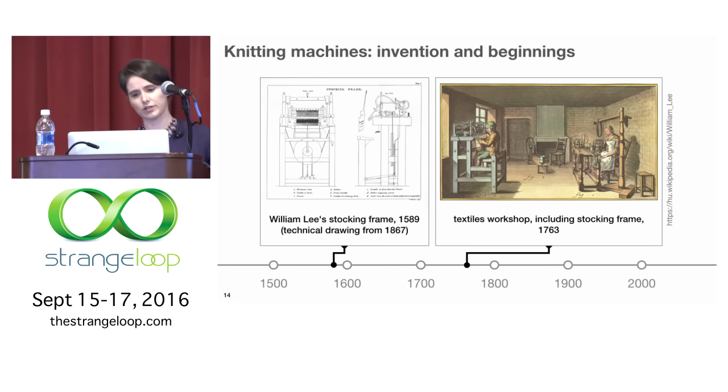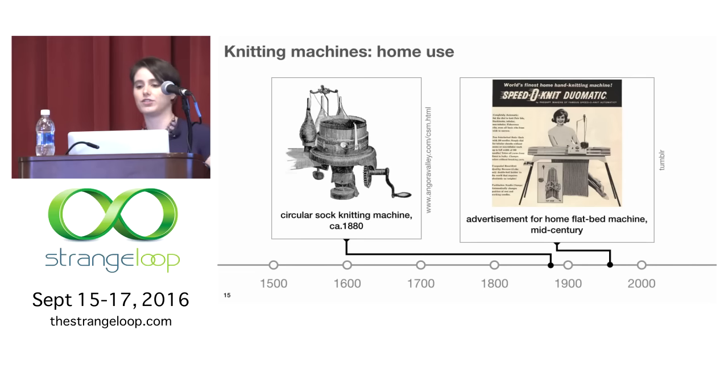And so these stocking frames would be found in cottage industry workshops. So they wouldn't be like a home so much as like a home industry. Just like a loom or a spinning wheel. By the end of the Industrial Revolution, these knitting machines were seeing both industrial and home use. So circular stock machines, the thing on the left, kind of like a sewing machine of that era, which is to say it's very expensive, but a major time saver for people who did have one and wanted to make their own things. It's kind of like a 3D printer today. So not everybody's going to have one.